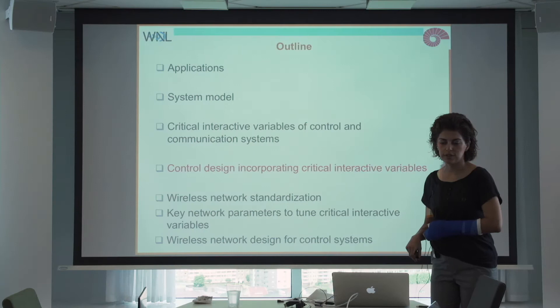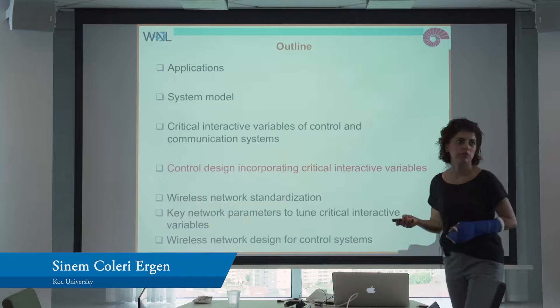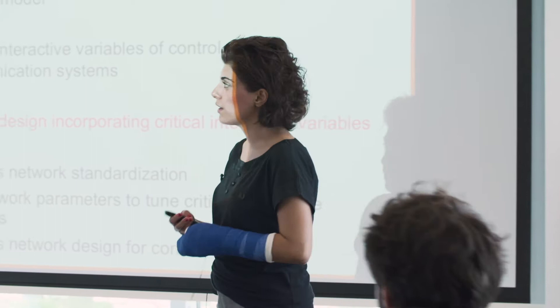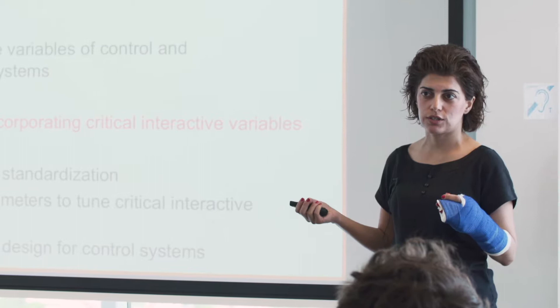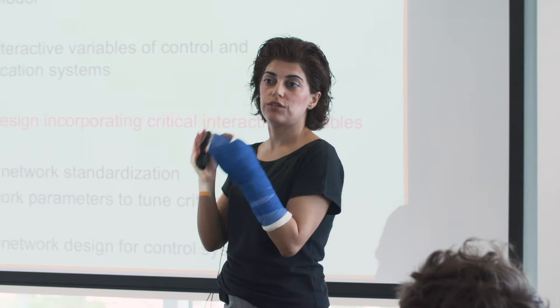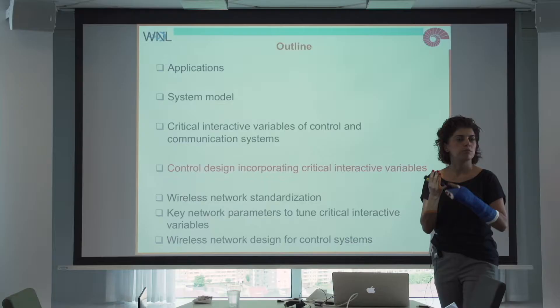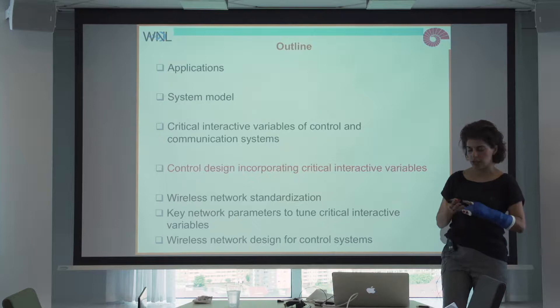This is the second part of wireless network design for cyber physical systems. In the first part, we reviewed critical interactive variables. We have a control and wireless communication system, and we want to design them together. They interact through these critical interactive variables: message delay, message dropout, and sampling period.